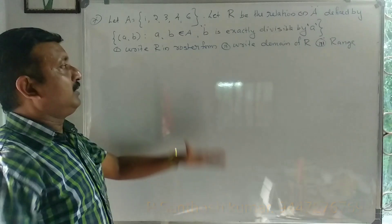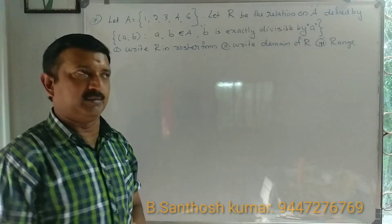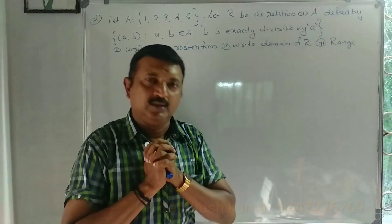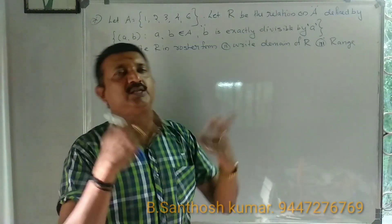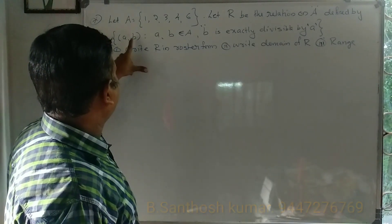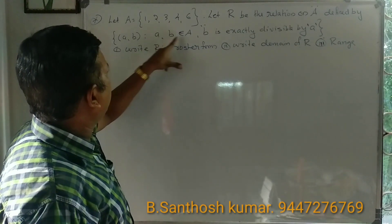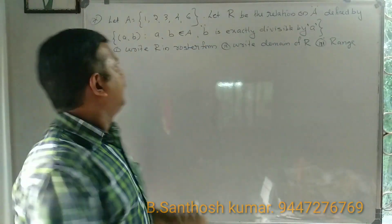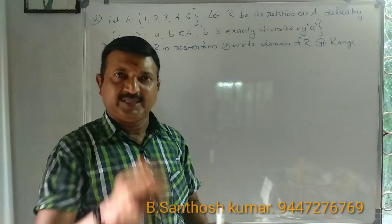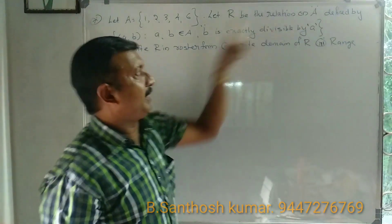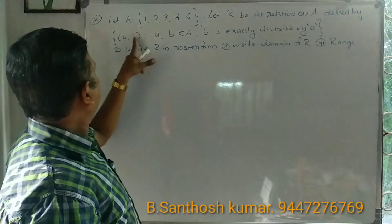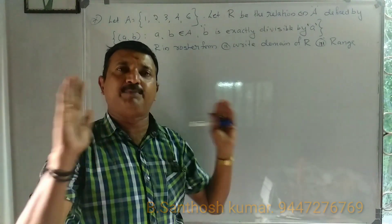Write R in roster form and find the domain, range, and codomain. We check divisibility: b divides a for each ordered pair. We consider A × A and check which pairs (a, b) satisfy that a is exactly divisible by b.